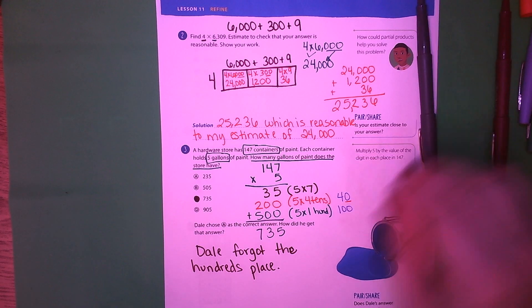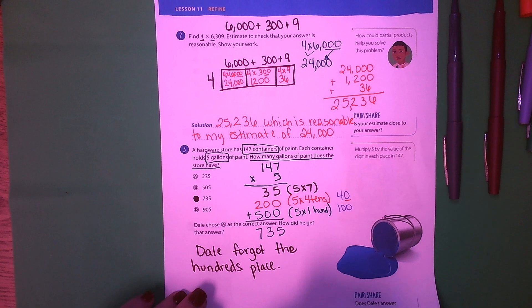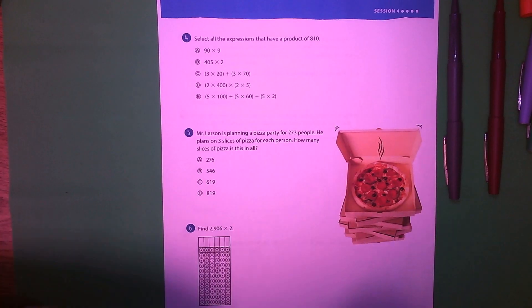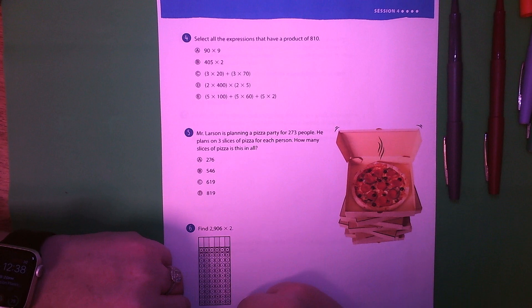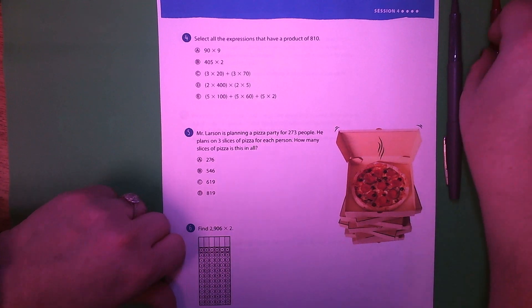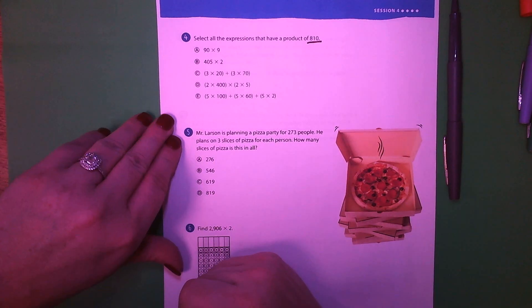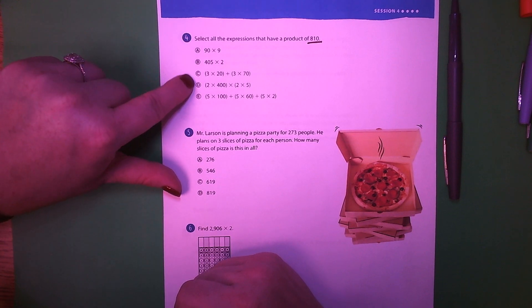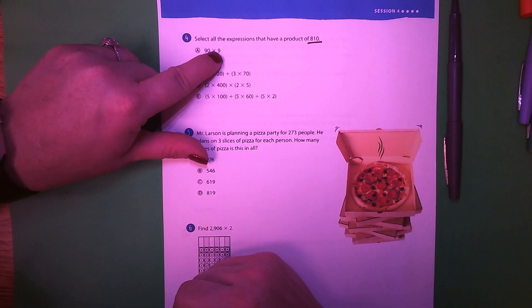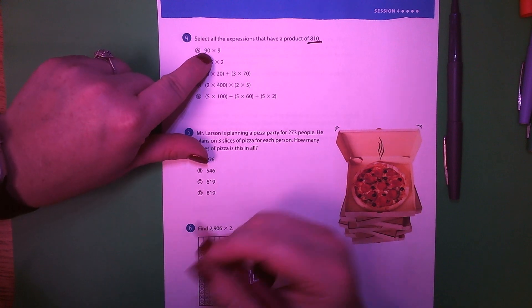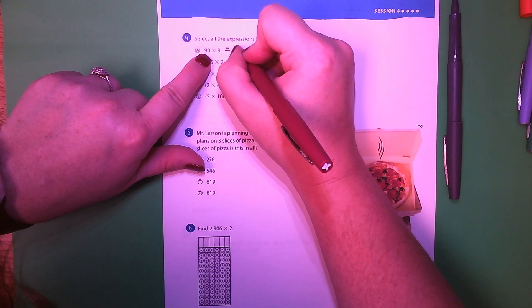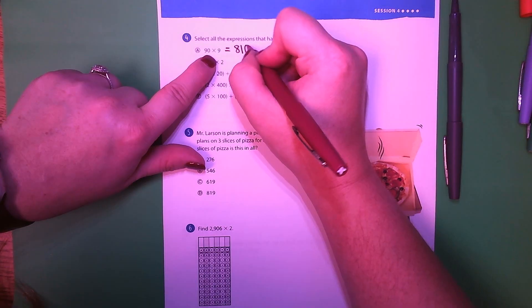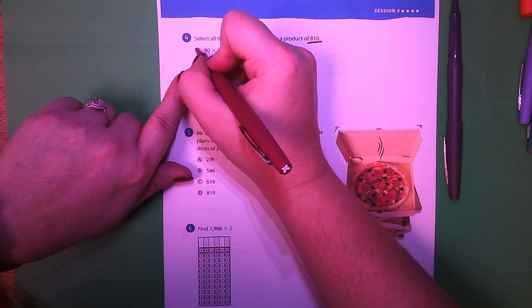Go ahead and turn to page 249. Select all the expressions that have a product of 810 — that means we're going to have to solve all five of these. Let's start: 9 times 90 — nine times 9 is 81, then add our zero — yes, so that one works.